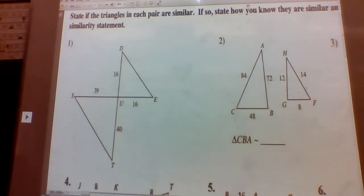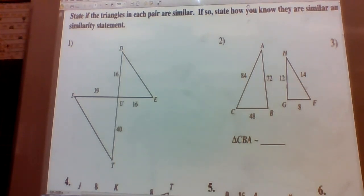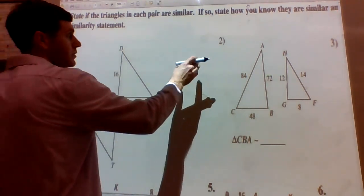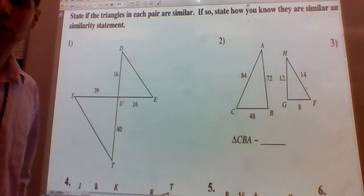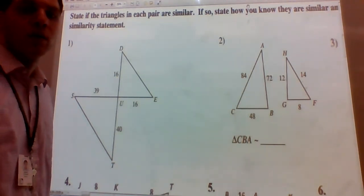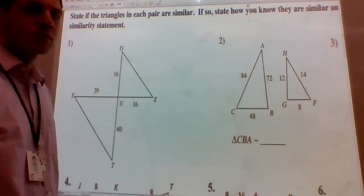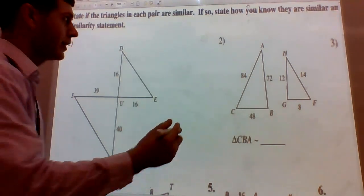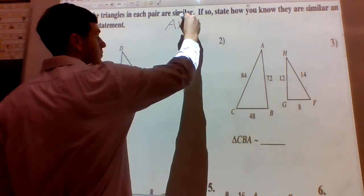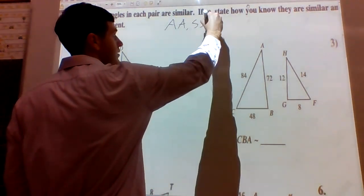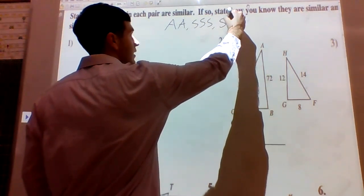State if the triangles in each pair are similar. If so, state how you know they are similar and write a similarity statement. We have three ways to show that triangles are similar — actually four ways. We can show all corresponding angles are congruent and all sides are proportional. Or we can use three shortcuts: angle-angle similarity theorem, side-side-side similarity theorem, and side-angle-side similarity.